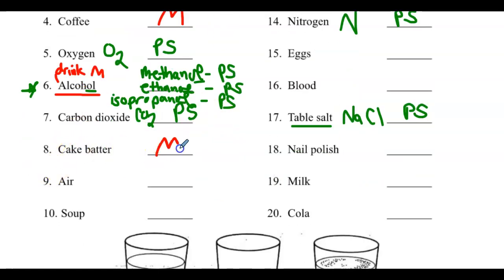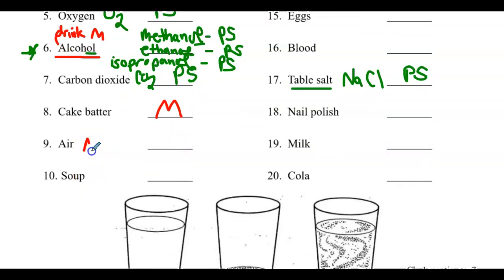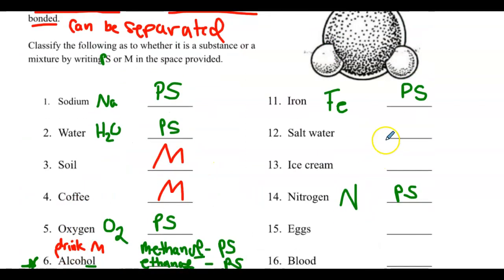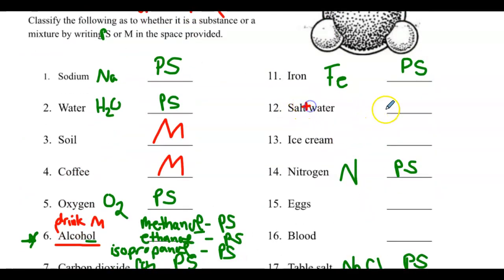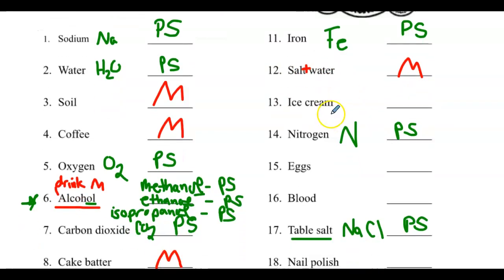Cake batter, it's definitely a mix. You got to mix it together. Air. Here's what's in air. It's mostly nitrogen, oxygen, carbon dioxide, water vapor, and you can actually separate all those out if you've got the right equipment. Soup. Alphabet soup. You can pick out all the letters of the alphabet. Salt water. It's literally salt plus water. If you evaporate it, or if you ever walk through a salty puddle in the winter, you get that salt ring on your jeans, it can be separated.